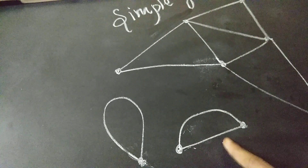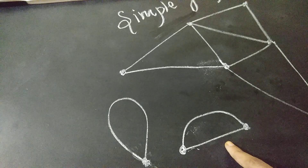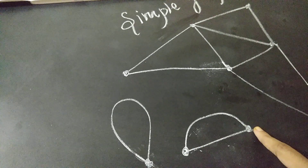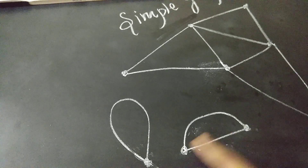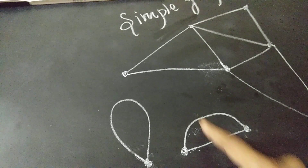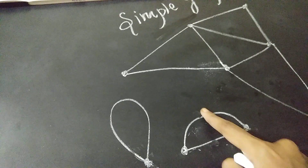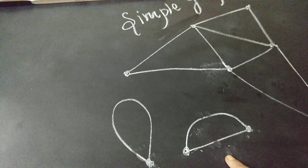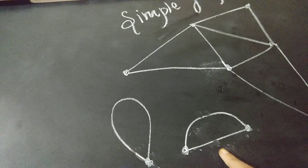And this is an example of multiple edges. Here you have two vertices, and for these two vertices you can see two edges. So here you can see the multiple edges.